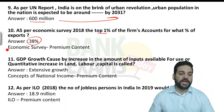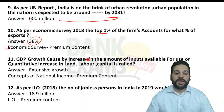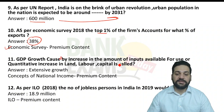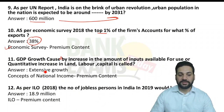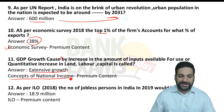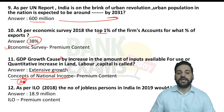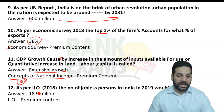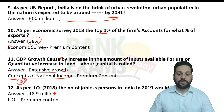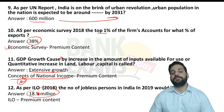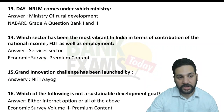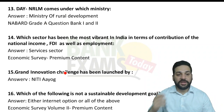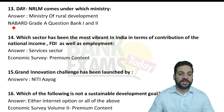GDP growth caused by a quantitative increase in inputs — land, labor, or capital — is called extensive growth; that was from the second chapter on concepts of national income, premium content. As per ILO, the number of jobless persons in India in 2019 would be 1.89 million — part of premium content in the ILO lecture. NRLM comes under the Ministry of Rural Development — that was from the NABARD Question Bank 1 and 2, available for free.